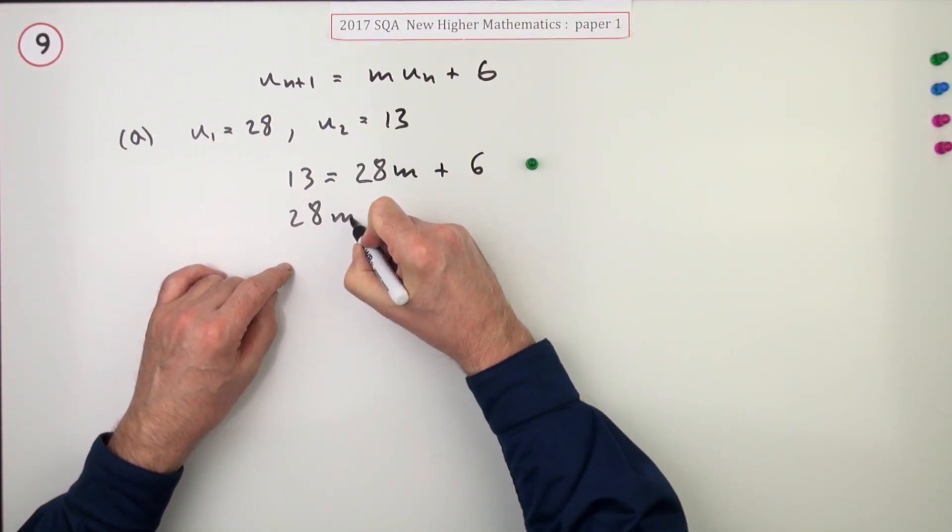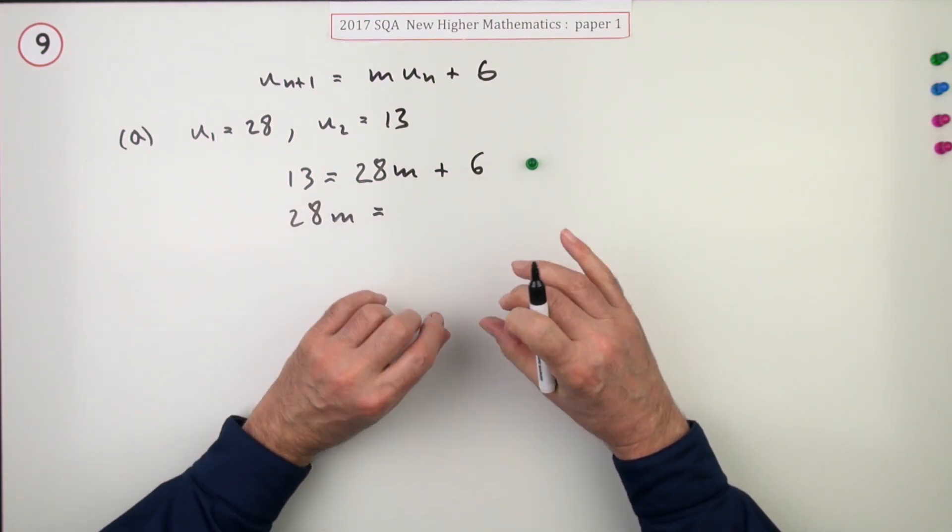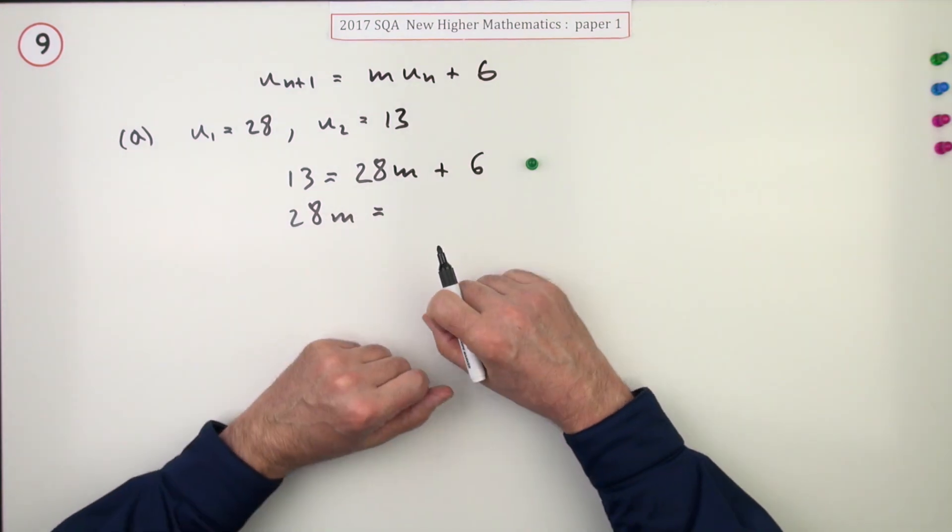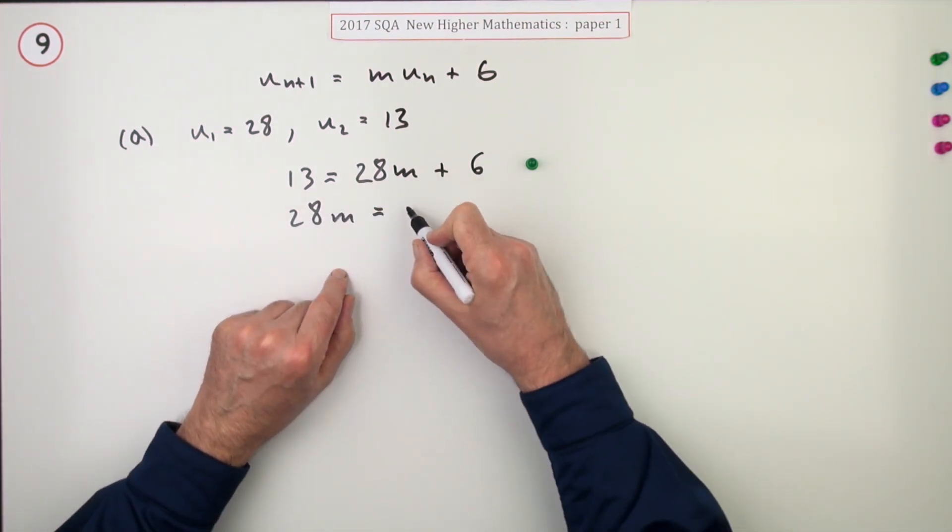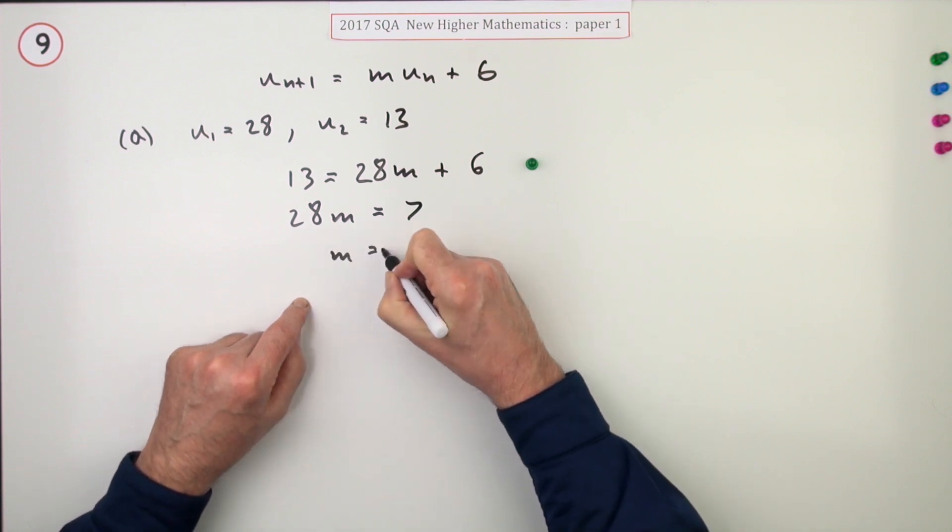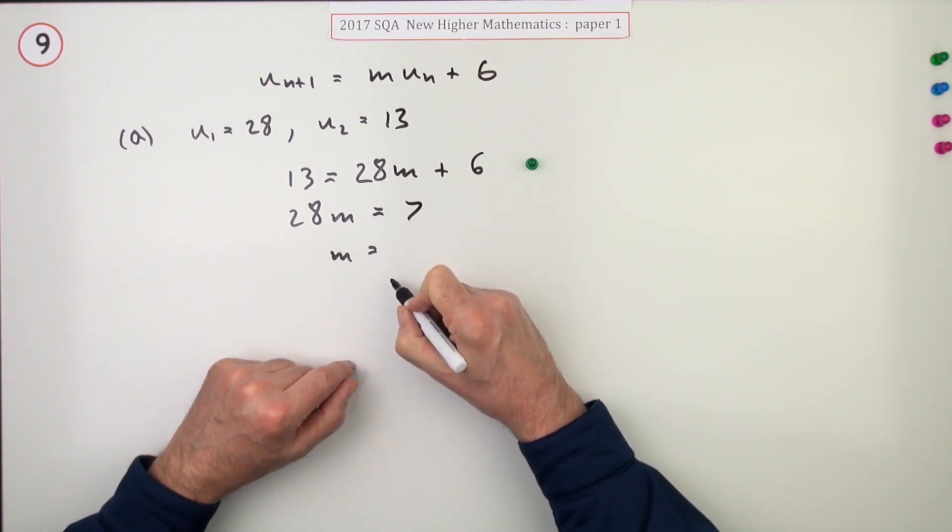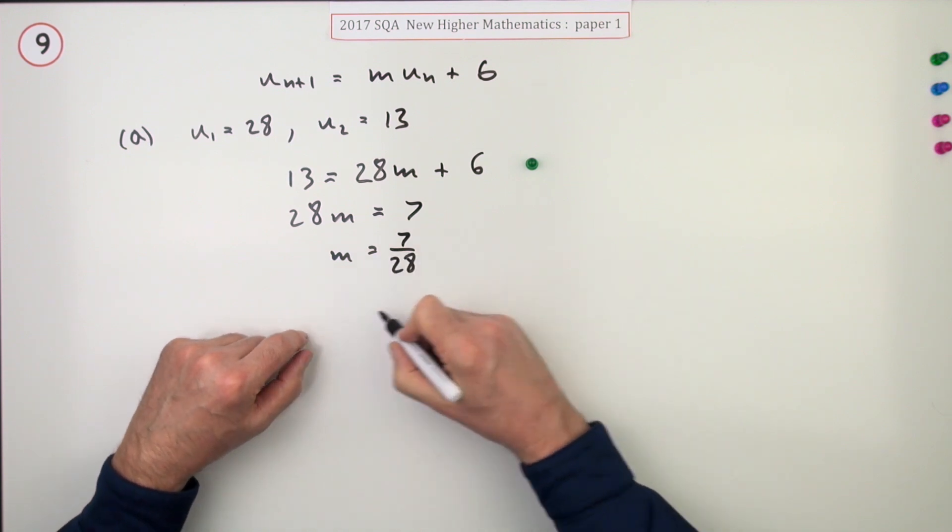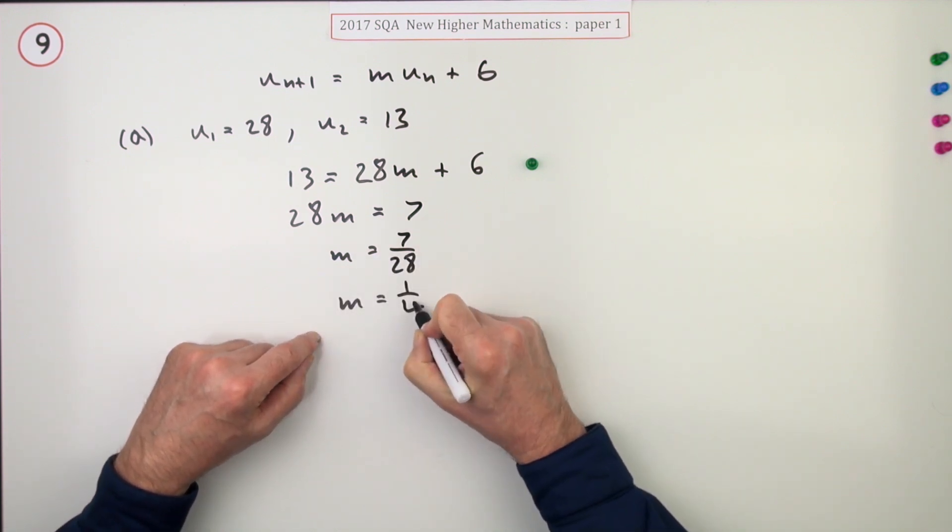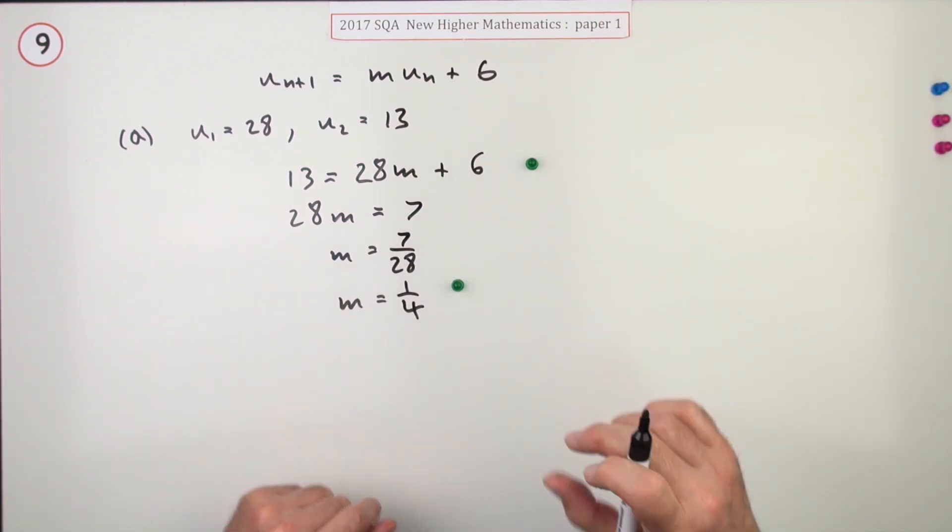There's only one mark for the next part and you don't have to show all the minutiae of the calculations. So you could just say 28 will equal, take the 6 away, which is going to be 7. So m is going to be 7 over 28, or you could just leap straight with a quarter. So m equals one quarter. There's the second mark.